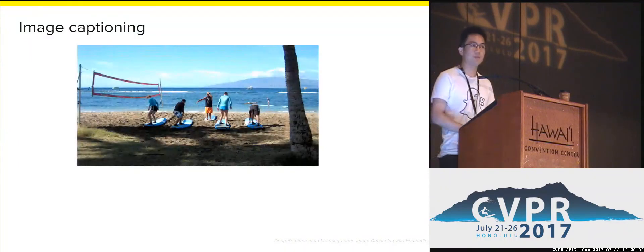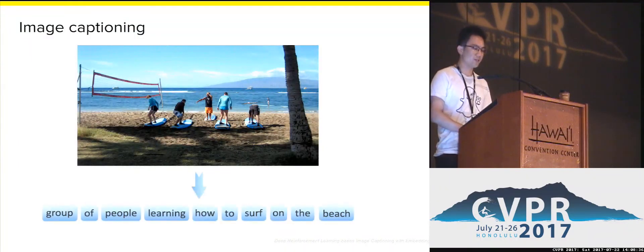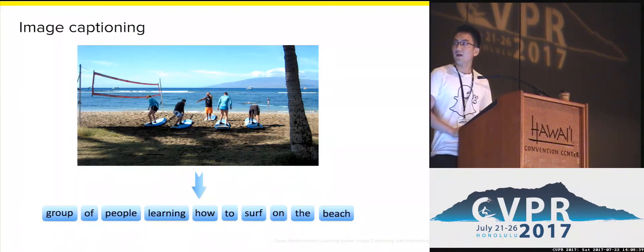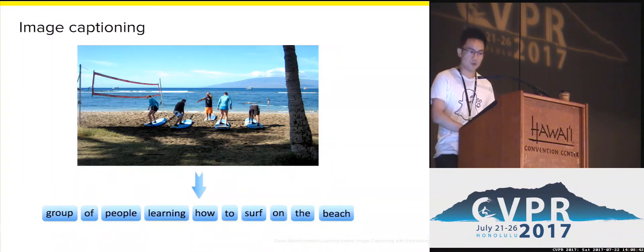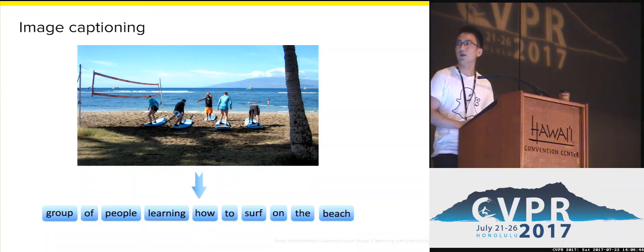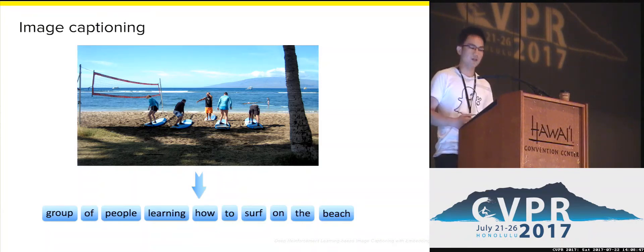Image captioning is the problem of giving an image to generate a sentence which describes its visual content. It is very interesting and challenging because it requires understanding a huge amount of visual information and then expressing it in natural language.